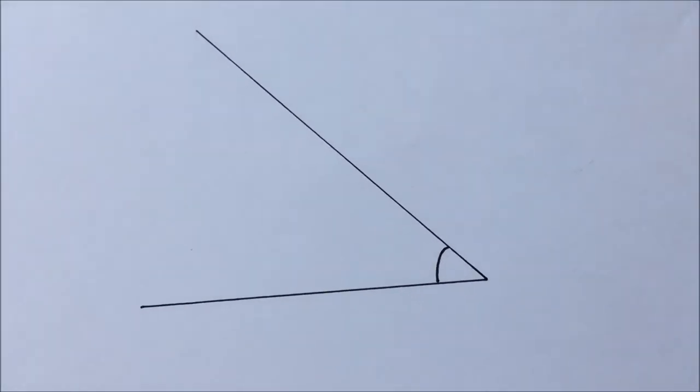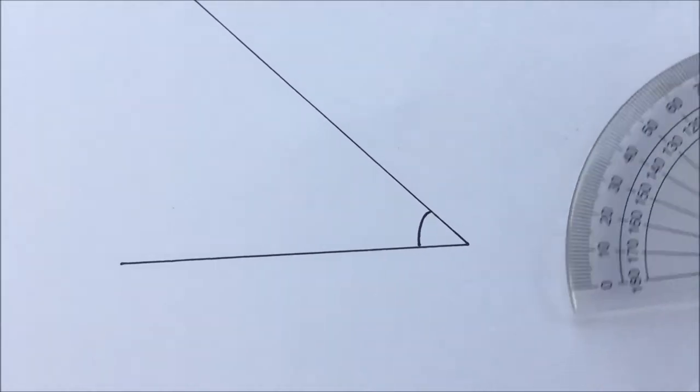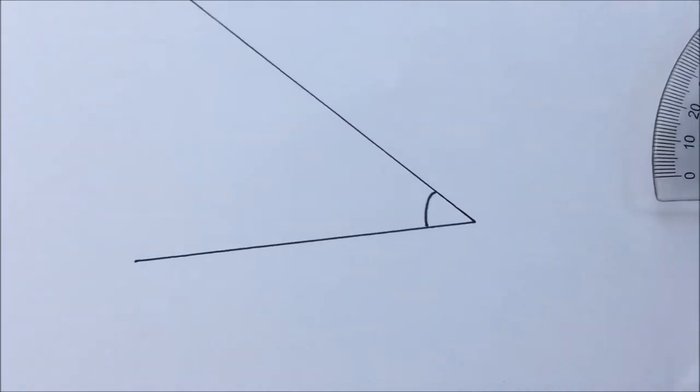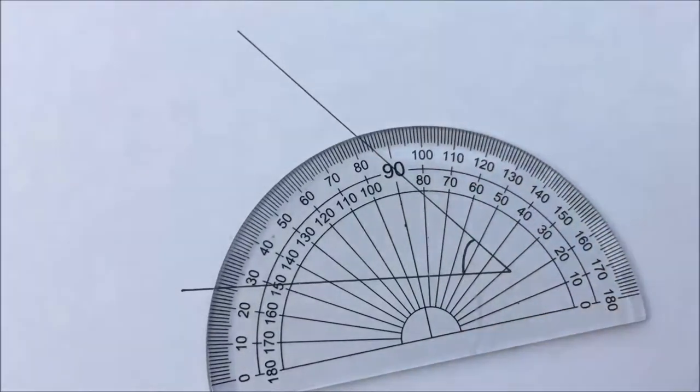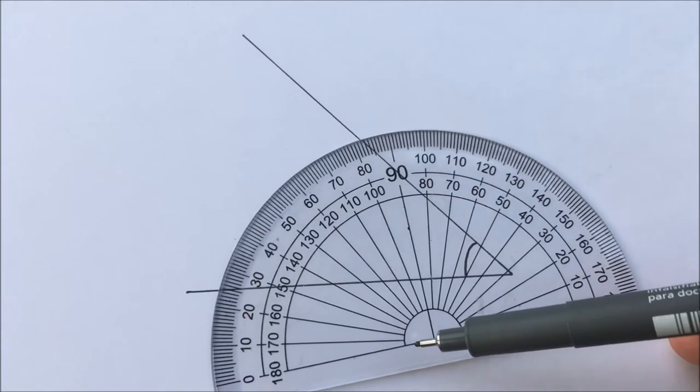We're going to measure an angle, and this one is an acute angle - it's less than 90 degrees. We're going to use our protractors. With our protractors, remember this is the important point here: we want to have this intersection...